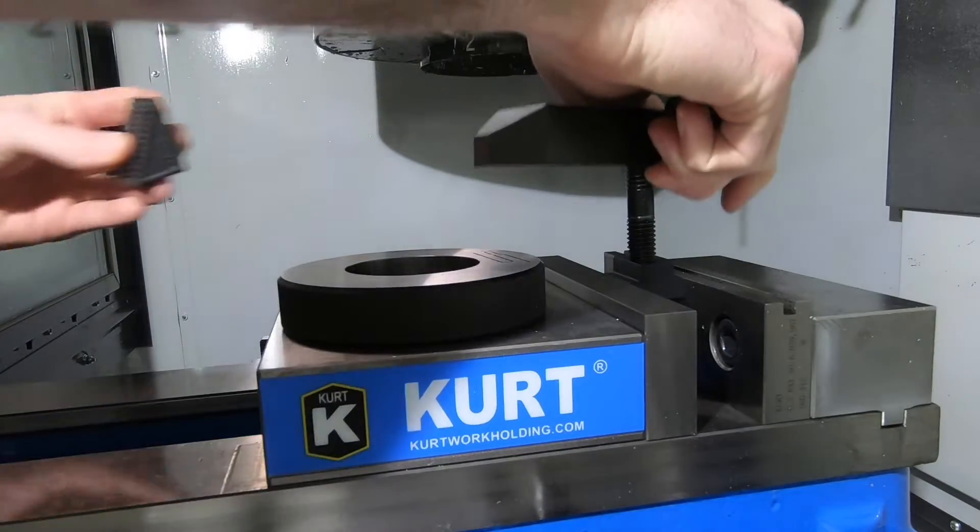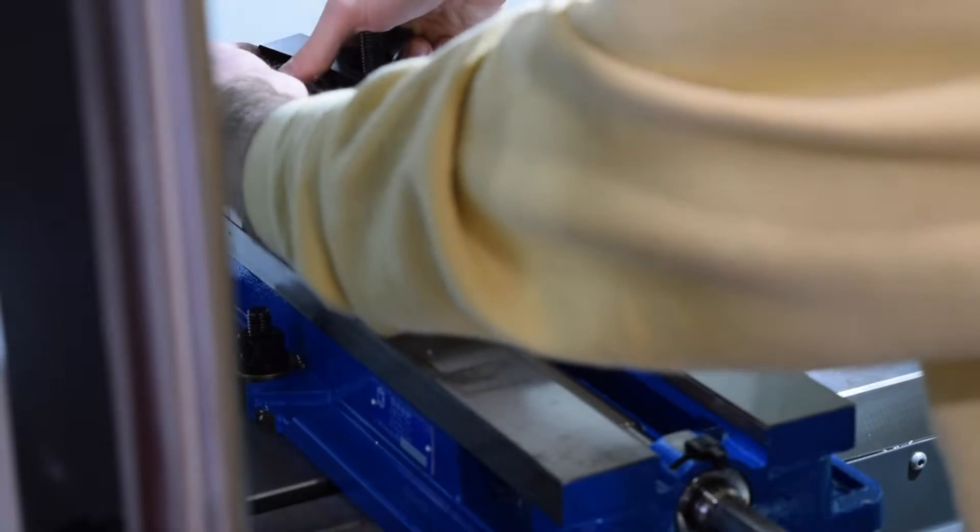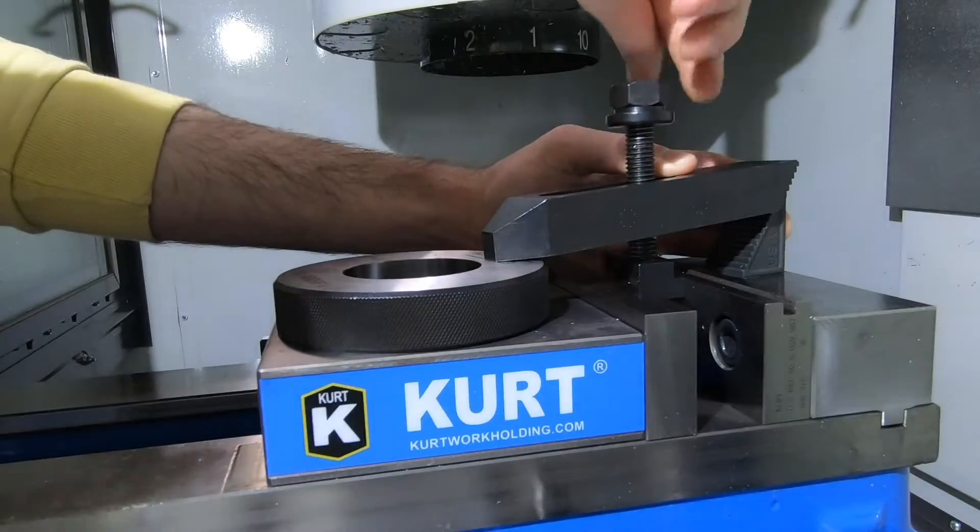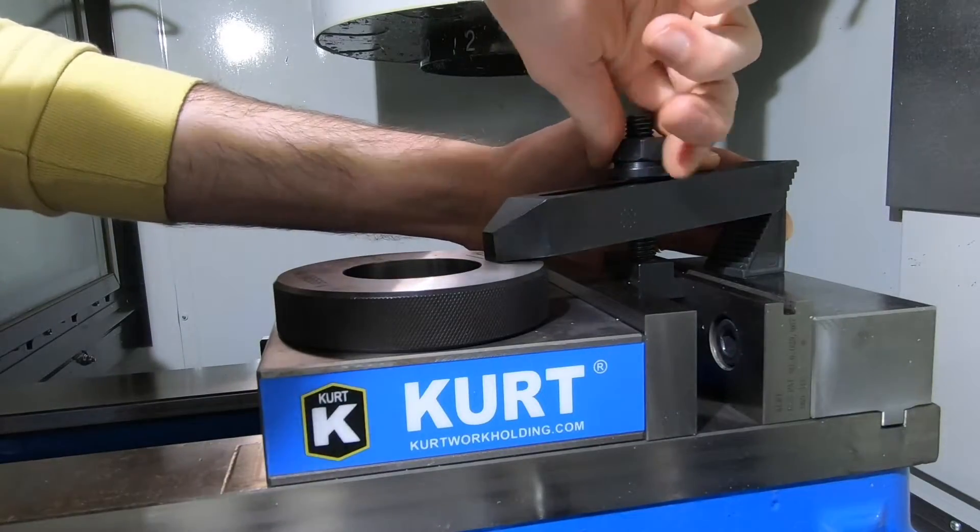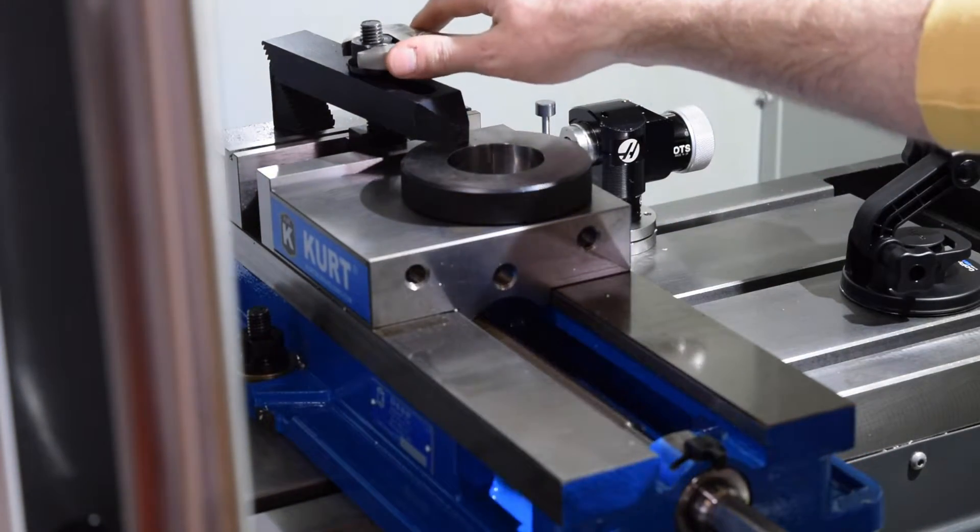If you just purchased your Haas machine, the installation technician will calibrate the probe for you, but eventually you'll need to recalibrate it yourself and you'll use a setup like this to do it. The machine has a macro cycle for calibration, and you'll supply the exact diameter of the ring gauge and the machine will do the rest.